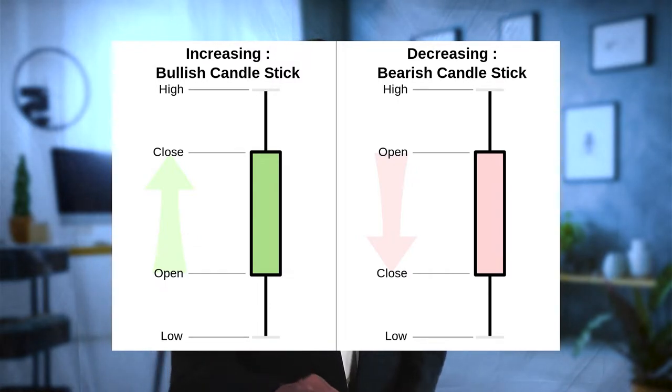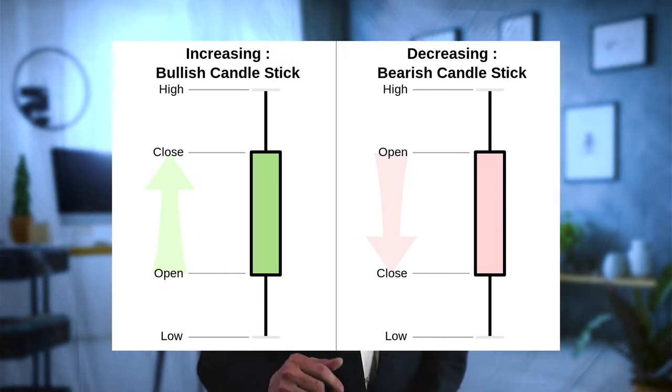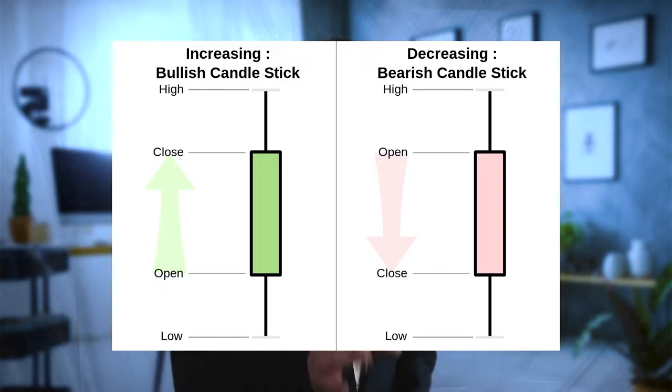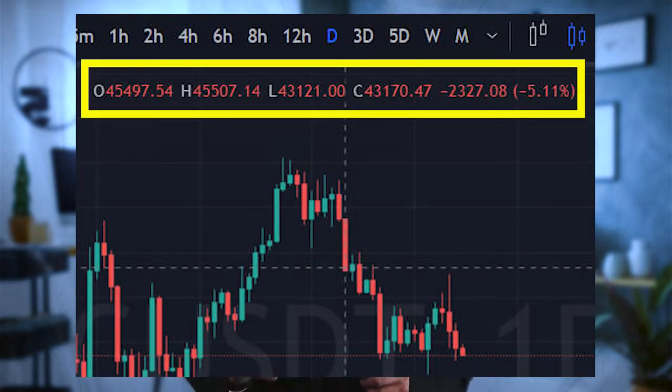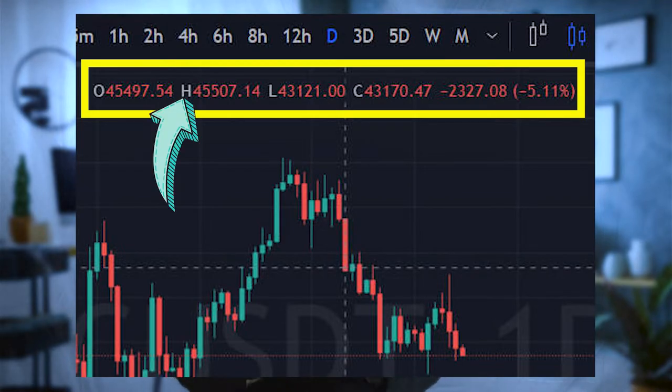Let's look at how a red candle works. Here we have an open, a close, a high and a low, but this time price opened and it ran up, then it ran down to close at a lower price than it had begun. So this candle will be red and it will document a downward trend. Here's a helpful tip: when you hover your cursor over a candle, the precise data will be shown on the screen, which will make reading the price a lot easier for you to see quickly.